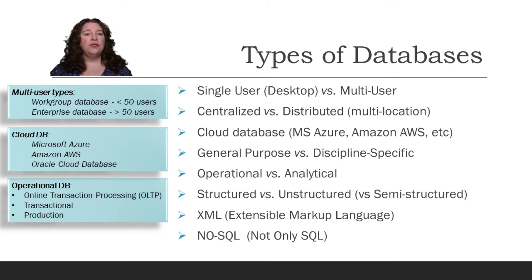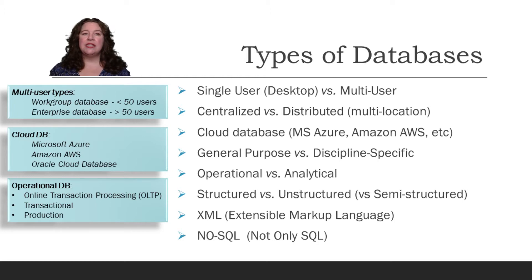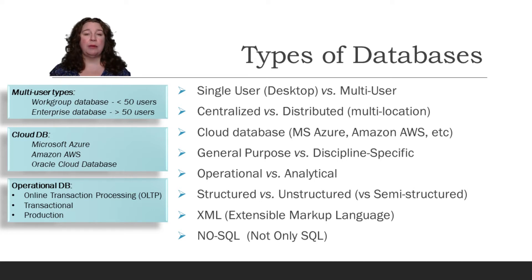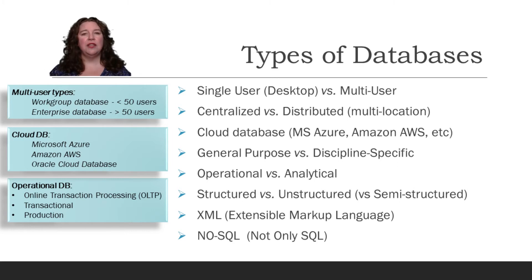There is centralized versus distributed. A distributed database can be stored in multiple locations — for example, a server in Seattle, another in Wisconsin, and another in New York. Each of these databases can hold all your data in multiple locations, which helps ensure that if there's a power outage or natural disaster, your data doesn't get lost. Centralized means it's all in one location, whether in your office or an off-site location.